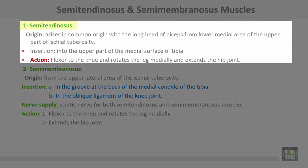Semitendinosus muscle takes origin in common with the long head of the biceps from the lower medial area of the upper part of the ischial tuberosity. Insertion into the upper part of the medial surface of the tibia. Action: flexor of the knee, medially rotates the leg, and extends the hip joint.